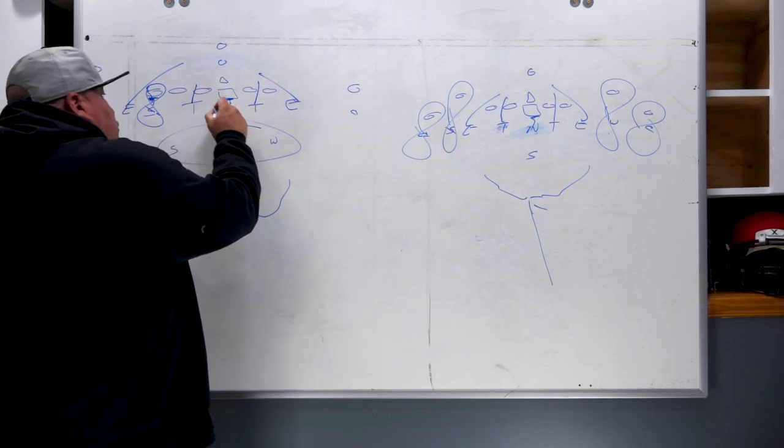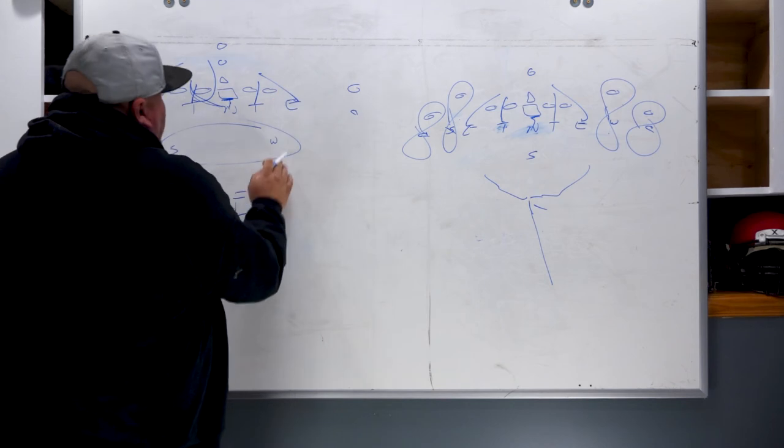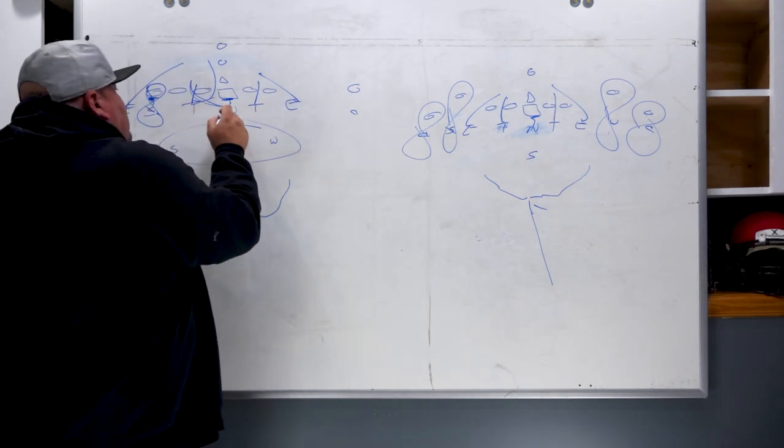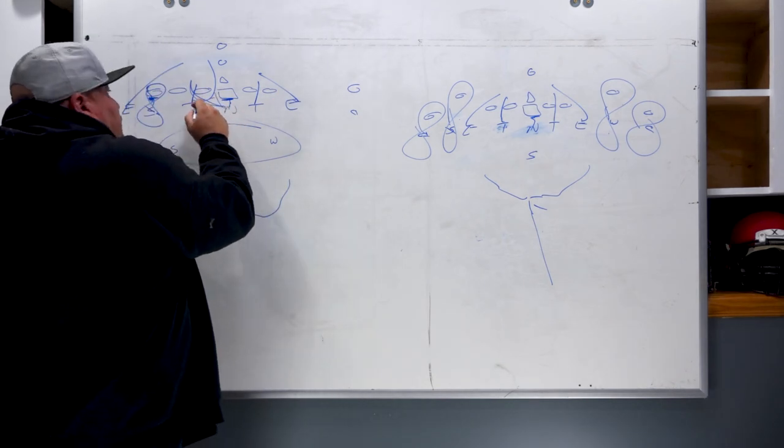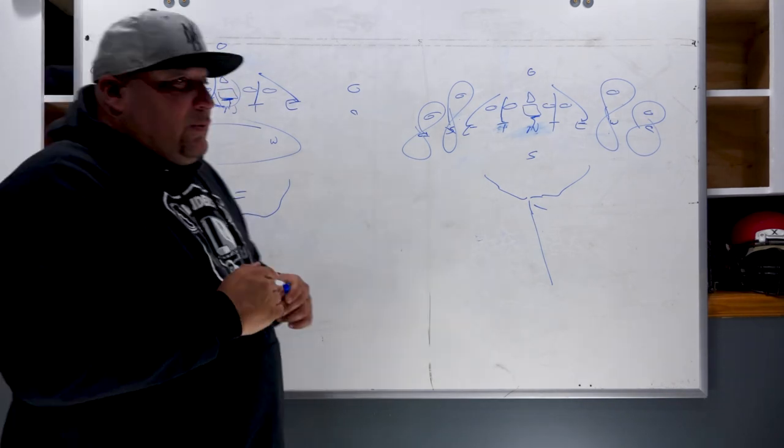You can go nose-under tackle and wrap the tackle in the A gap—basically an A gap exchange. We could do it the other way. We could send the tackle first and bring the nose, or bring the nose first and then bring the tackle around. We could bring the linebackers, but I wouldn't suggest playing it that way.